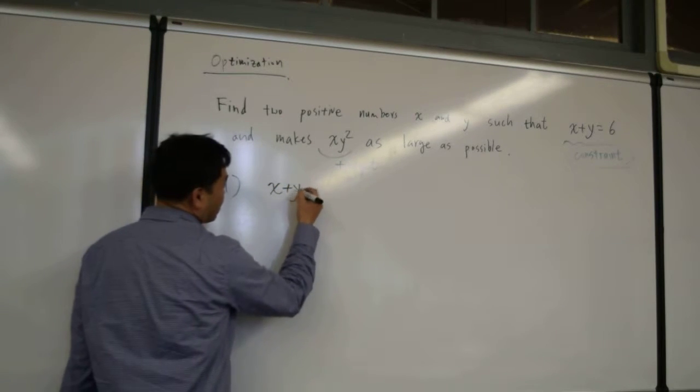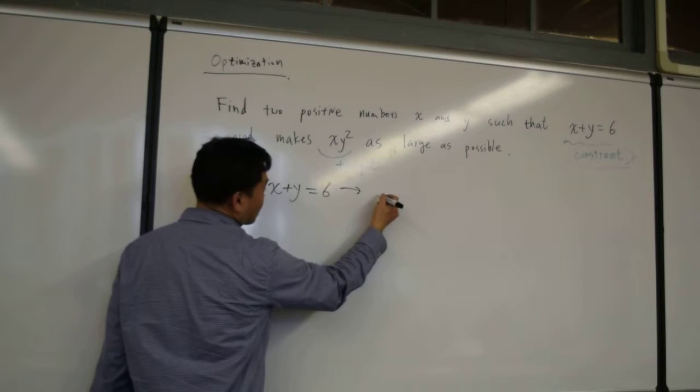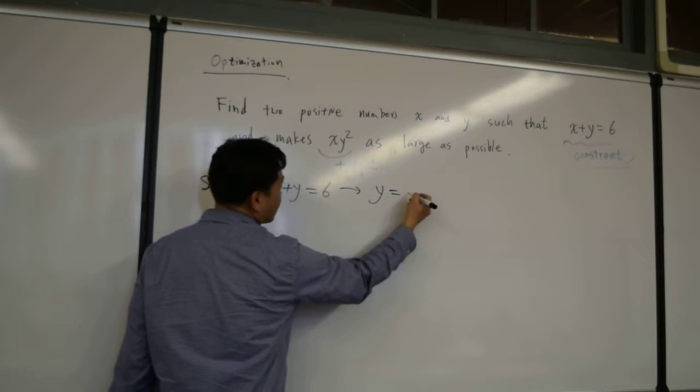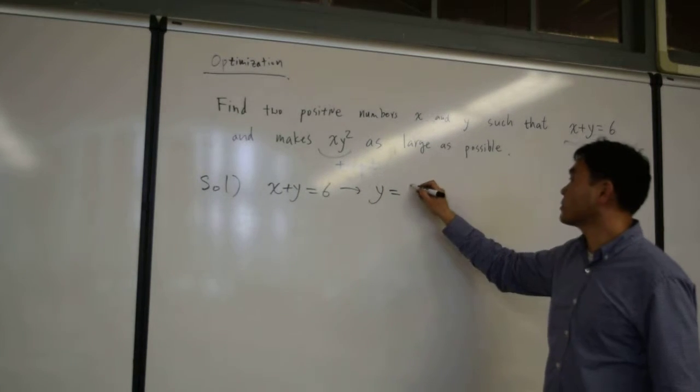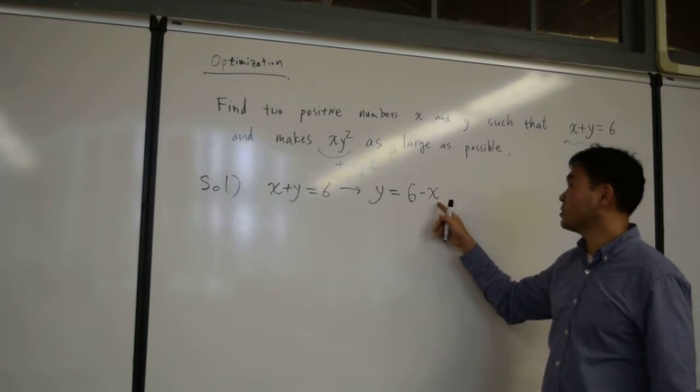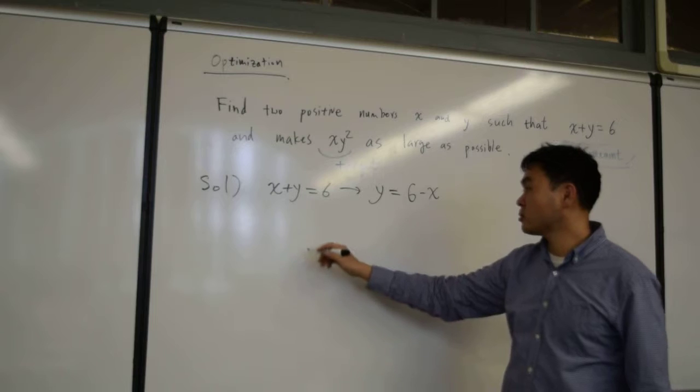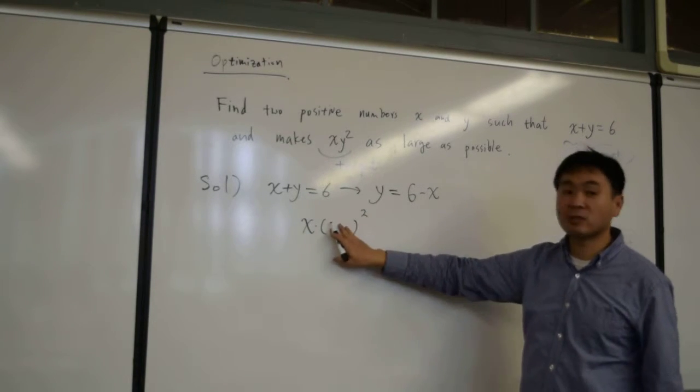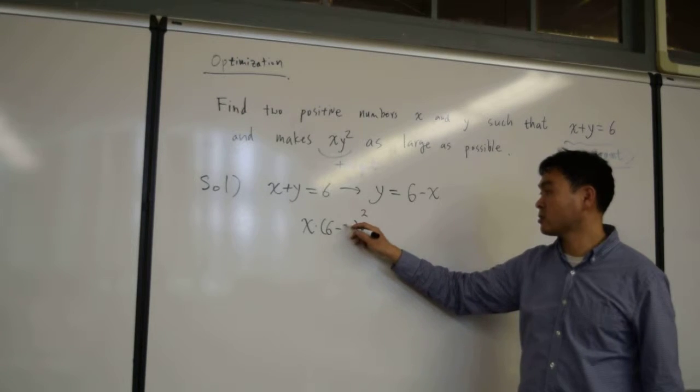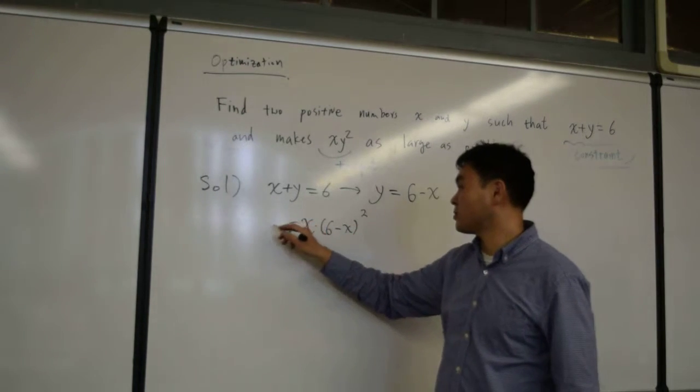x plus y equals 6. Let's solve this for y. y is 6 minus x. Plug it in here. So what's your function? x times, instead of y, you have 6 minus x. So that's your function f of x.